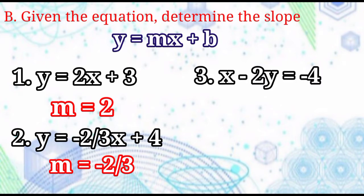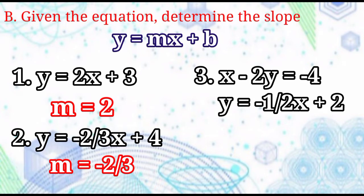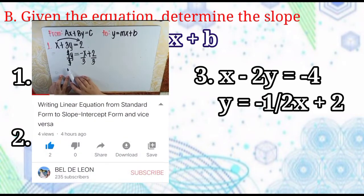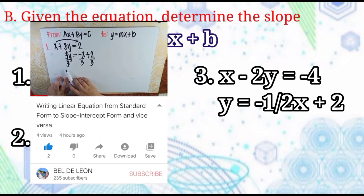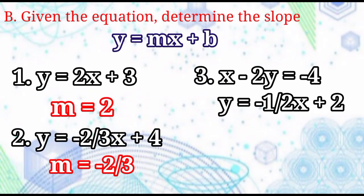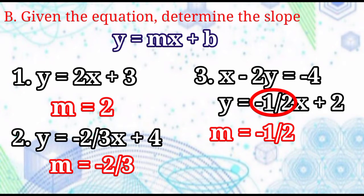Example number 3: X minus 2Y equals negative 4. Observe that this equation is in standard form. Rewrite it to slope-intercept form. It will become Y equals negative 1 half X plus 2. Watch the tutorial video on rewriting a linear equation from standard form to slope-intercept form. Going back, Y equals negative 1 half X plus 2. The slope is equal to negative 1 half. This is how to determine the slope given the equation of the line.